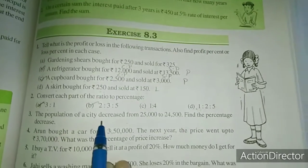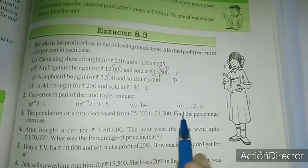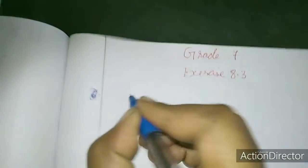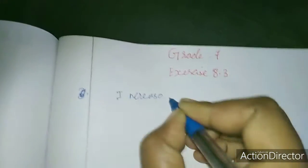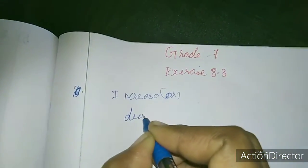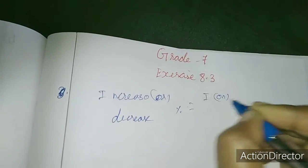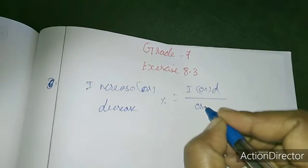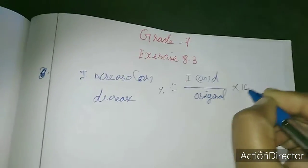The population of your city decreased from 25,000 to 24,500. Find the percentage decrease. The formula for increase or decrease percentage is: increase or decrease divided by original amount, into 100.